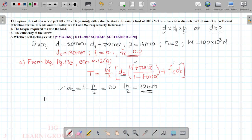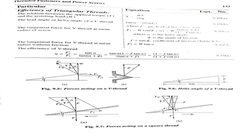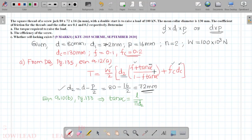From equation 9.10b, page number 133, we can write tan alpha equals l by pi d2. Then l equals n times p. For double start, n is 2, so the equation becomes tan alpha equals n p divided by pi d2, which is 2 times 16 divided by pi times 72.